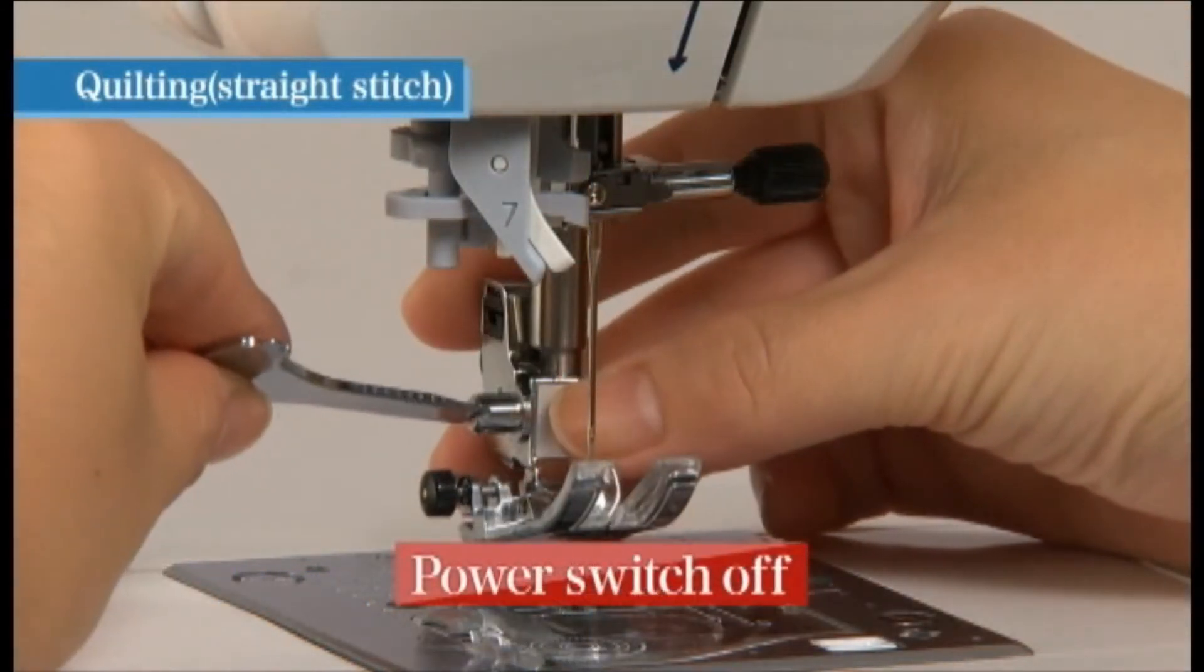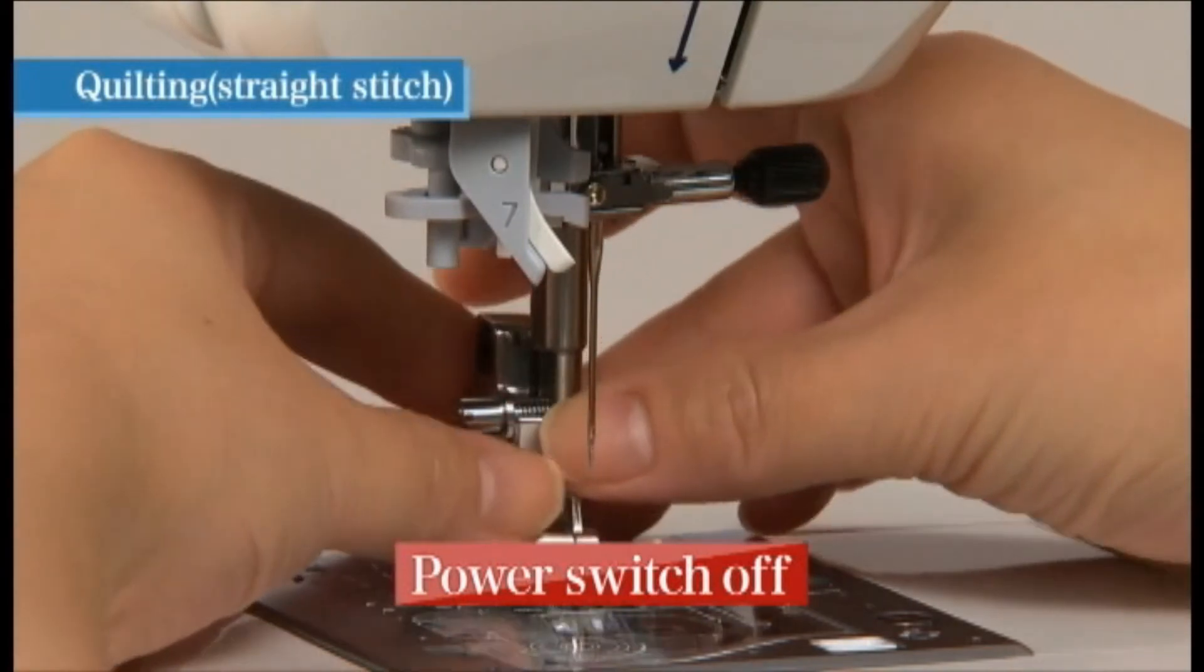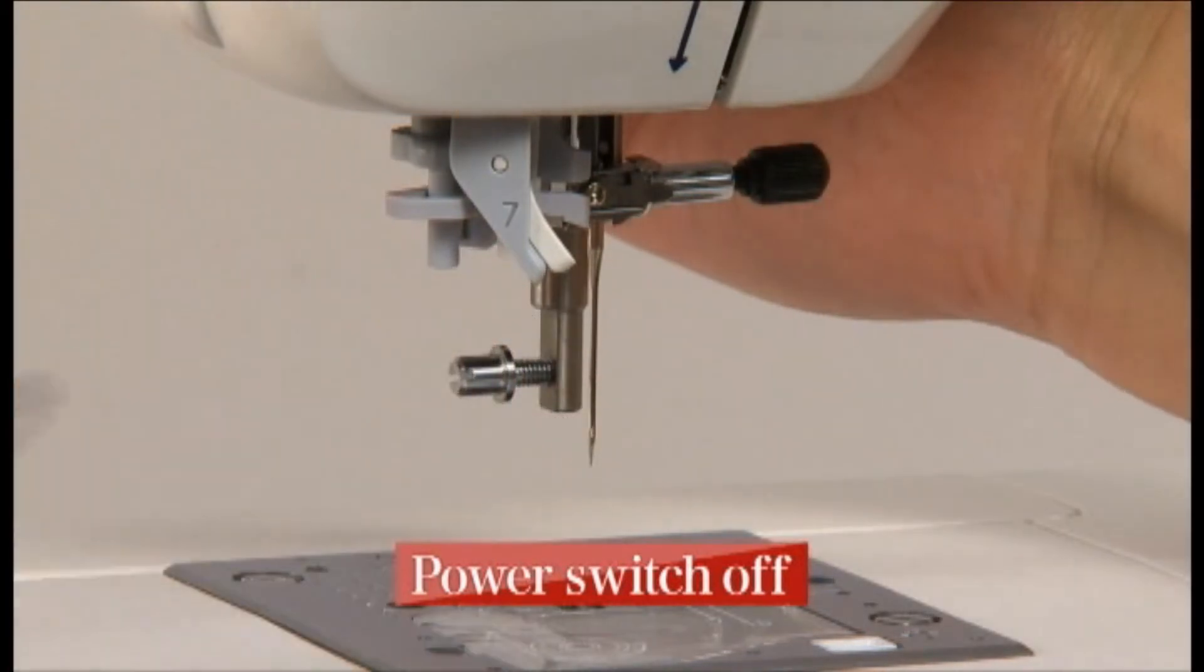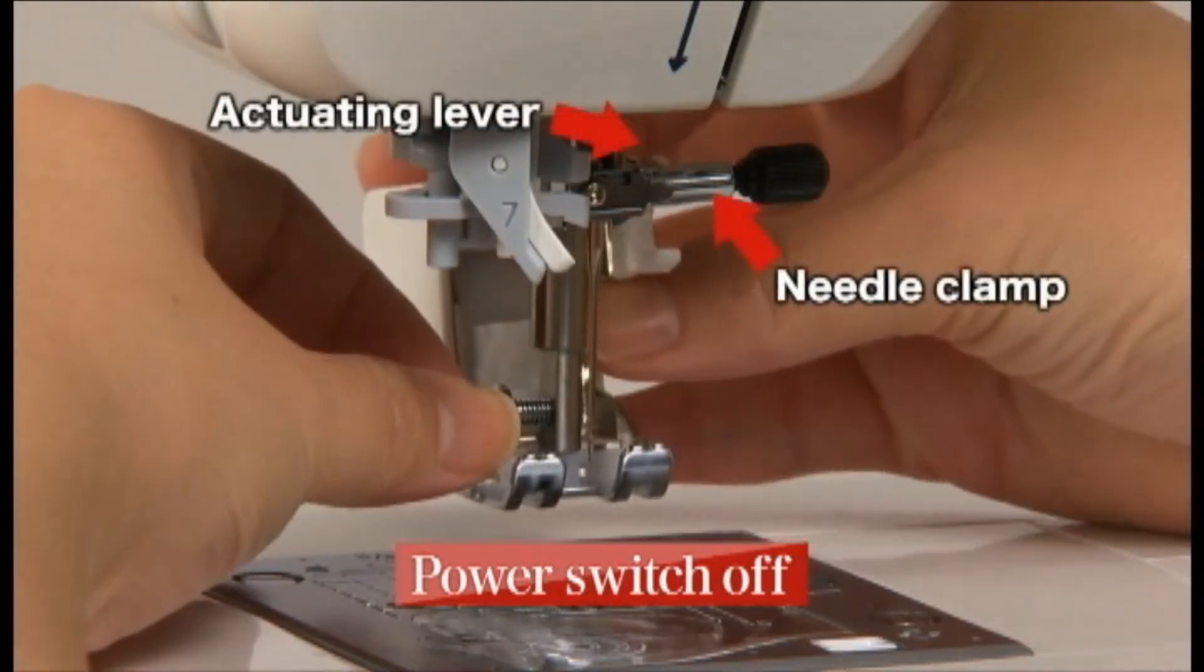Remove the presser foot holder and place the fork portion of the actuating lever around the needle clamp. Fit the mounting part into the presser bar and securely tighten the set screw for the presser foot holder.